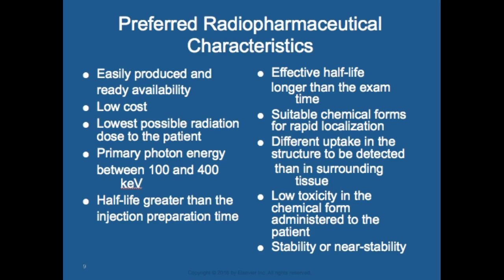Primary photon energy is 100 to 400 keV. The half-life must be greater than the injection prep time — it would be bad if radioactivity is halfway gone before you inject it. The effective half-life should be longer than the exam time. You want different uptake in the structure to be detected compared to surrounding tissue, low toxicity in the administered form, and stability so it's not volatile.